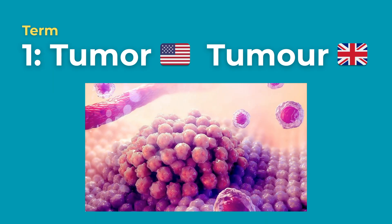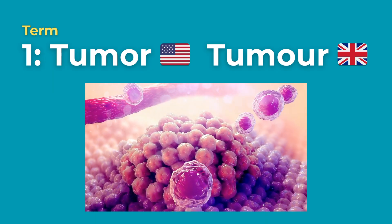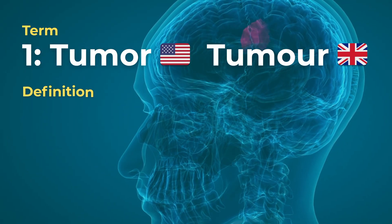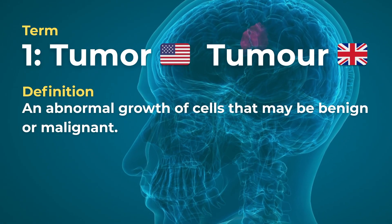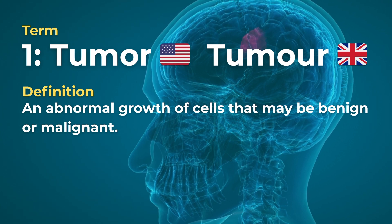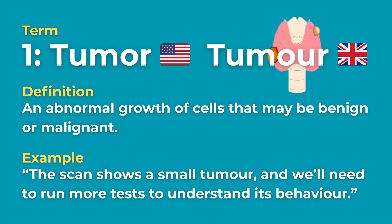Note that there are differences in American and British English spelling. Tumour is an abnormal growth of cells that might be benign or malignant — we'll get into these terms in a little bit. Example: 'The scan shows a small tumour and we'll need to run more tests to understand its behaviour.'